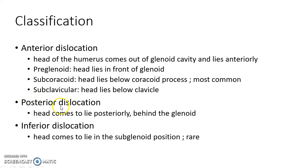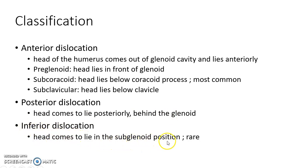In posterior dislocation, the head comes to lie posteriorly behind the glenoid. In inferior dislocation, the head comes to lie in the subglenoid position. Inferior dislocation is a very rare type of shoulder dislocation.